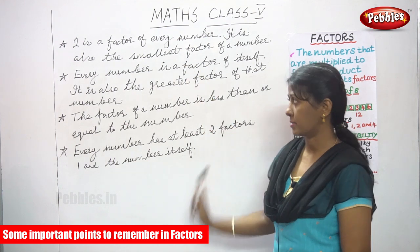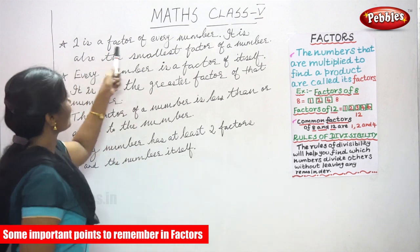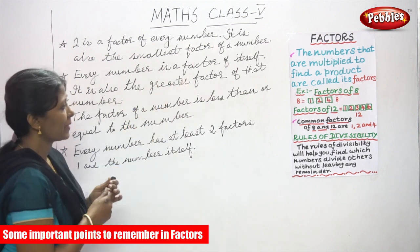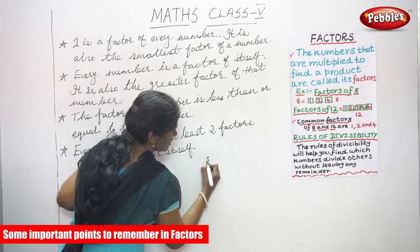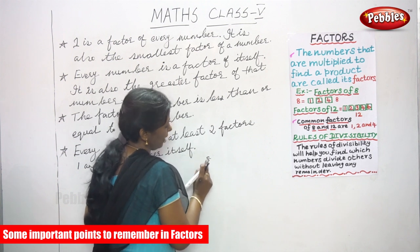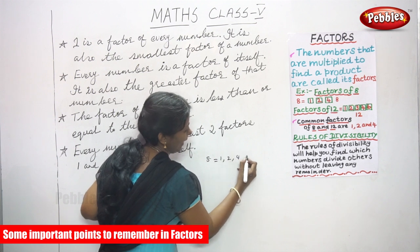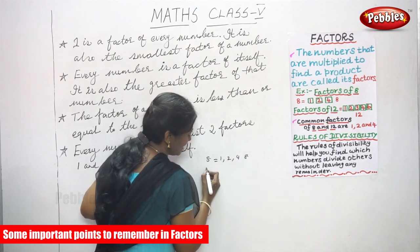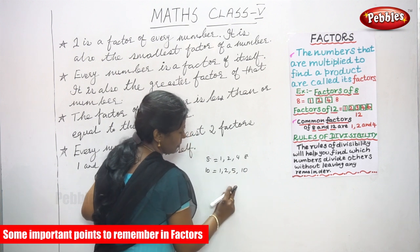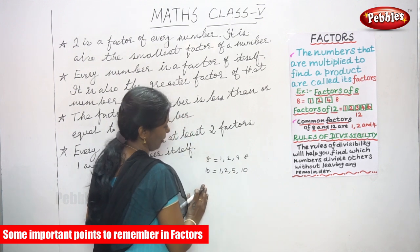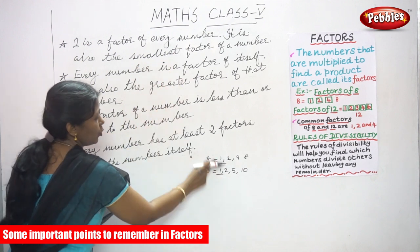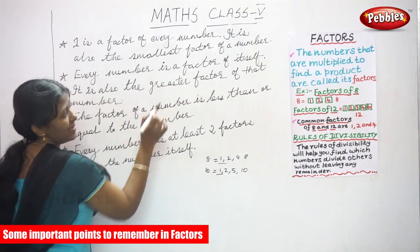These are the points to remember in factors. The first point: one is a factor of every number. It is also the smallest factor of a number. For example, if we take eight — the factors of eight are one, two, four, and eight. For ten, the factors are one, two, five, and ten. For any number, one must always appear as a factor.